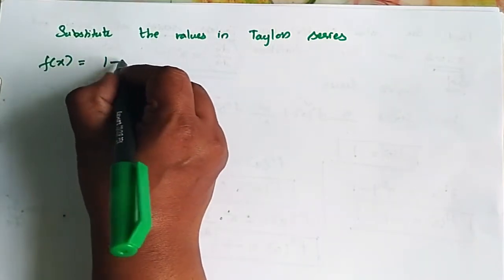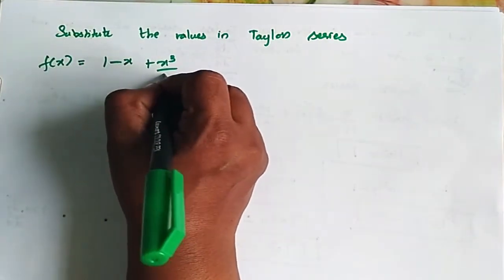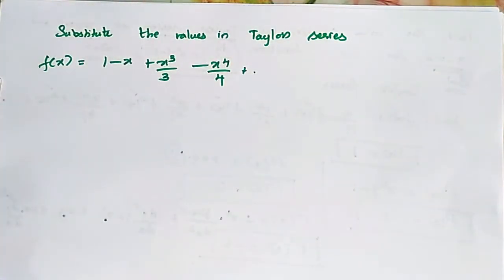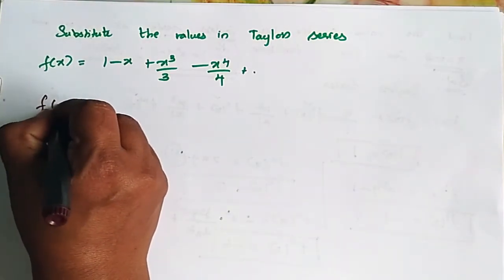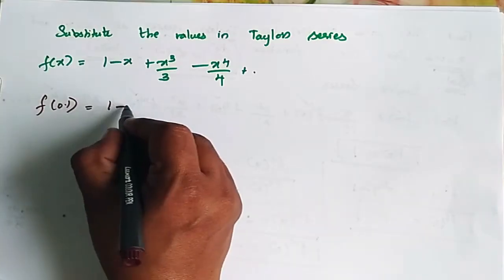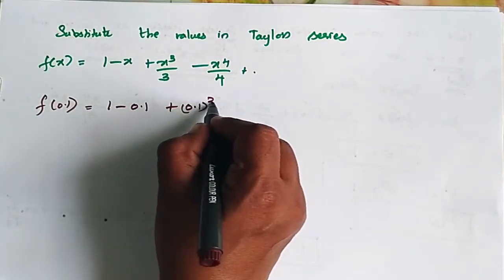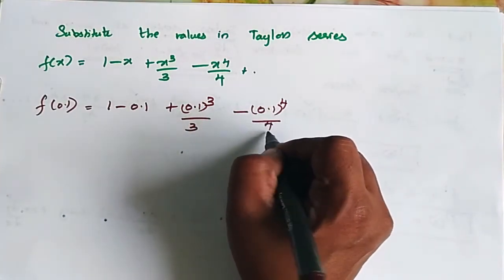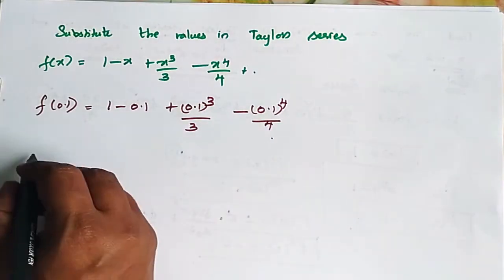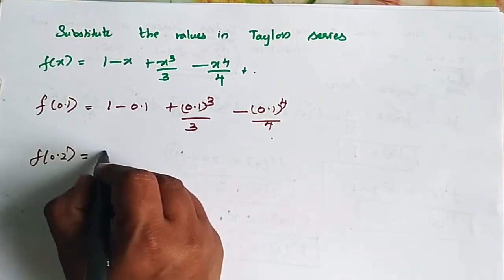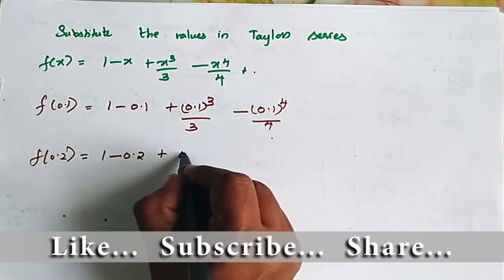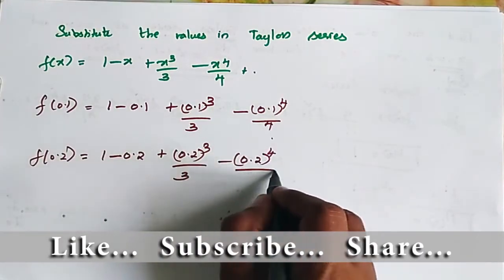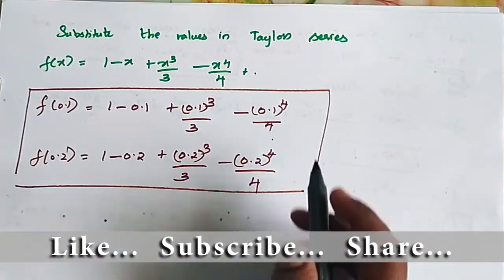So f of x is approximately equal to 1 minus x plus x cube by 3 minus x power 4 by 4 plus etc. Substituting x equal to 0.2, f of 0.2 is approximately equal to 1 minus 0.2 plus 0.2 the whole power 3 by 3 minus 0.2 the whole power 4 by 4.